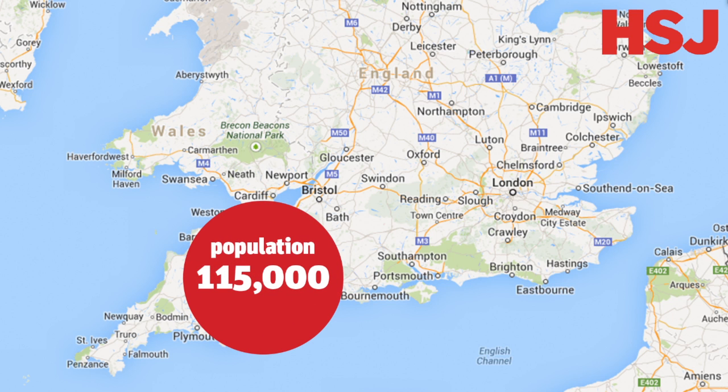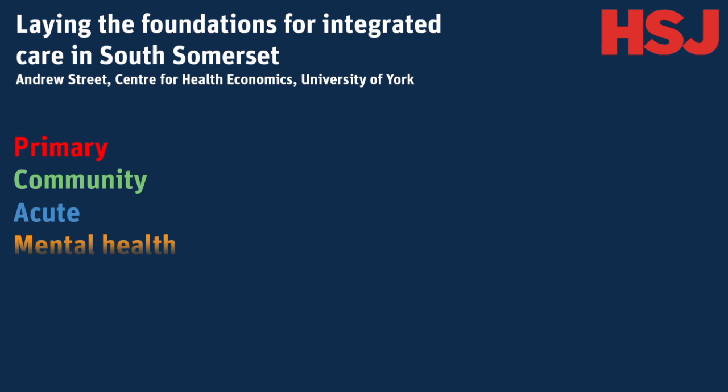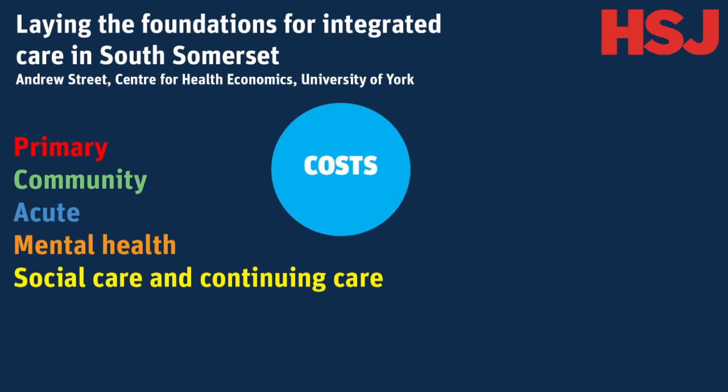The project has created a database that links together previously separate data sets about primary care, community care, acute care, mental health care, social care and continuing care. The linked data provide information about each person's use of health and social care for a full year. Costs for each type of care have also been calculated, so that annual health and social care costs can be constructed for each individual in the population.